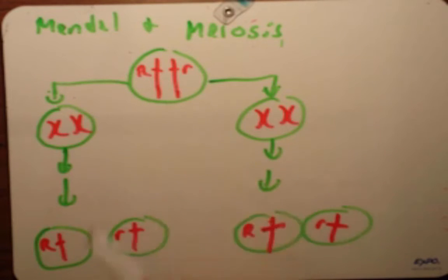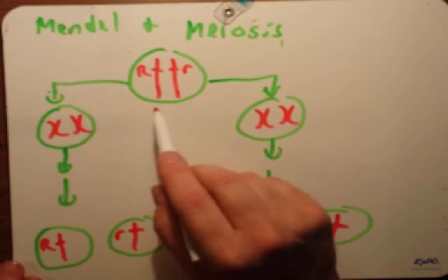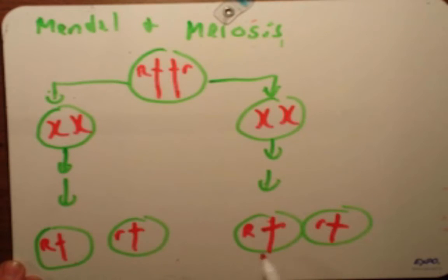So this explains Mendel's principle of segregation. We have two copies of each allele. These alleles, through the process of meiosis, segregate so that each gamete has one allele. And how they segregate is random. That is, which gamete gets the big R or the little r is random.